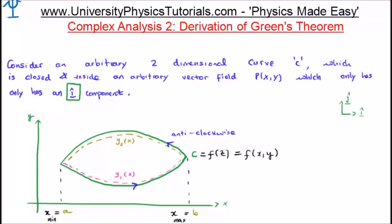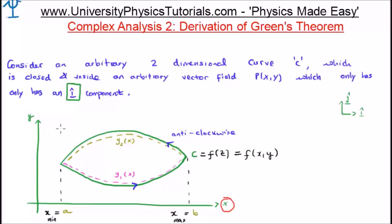Let's consider an arbitrary two-dimensional curve, which I'm going to call C. This is going to be closed and it's going to be inside an arbitrary vector field. I'm going to call the vector field P, and it's going to be a function of both x and y. At the moment we're going to consider just the x component, or the i-hat component, of the vector field P. So we have a two-dimensional curve C inside an arbitrary vector field which only has an i-hat component, and I've sketched this on the plane at the bottom left of your screen.